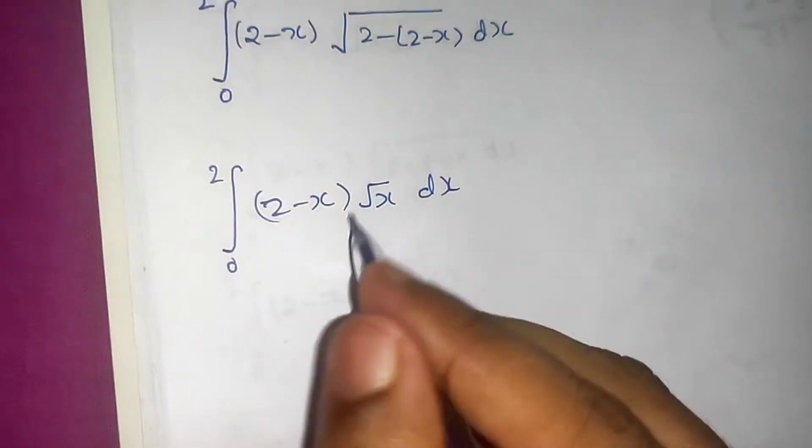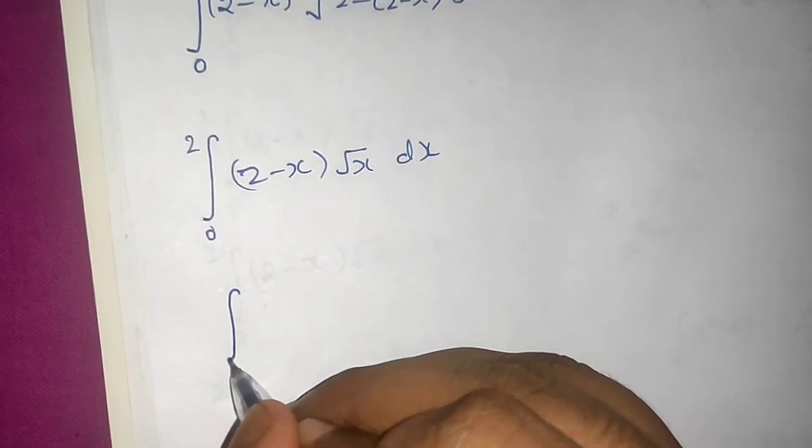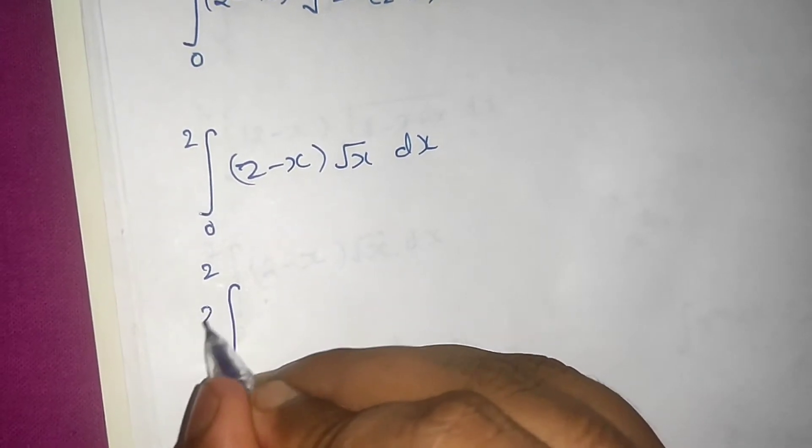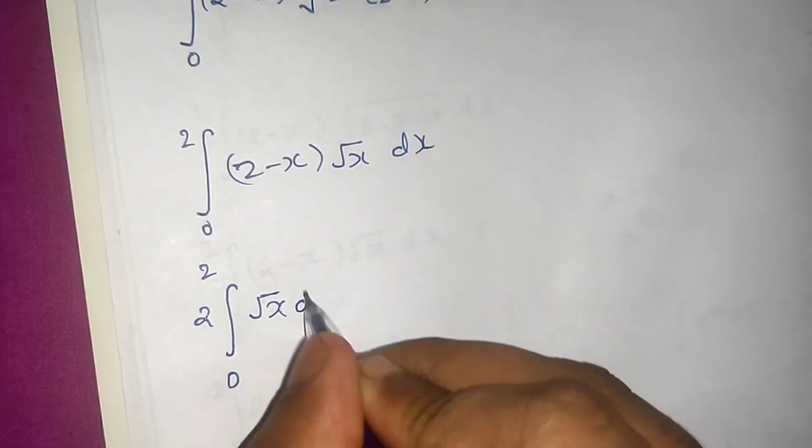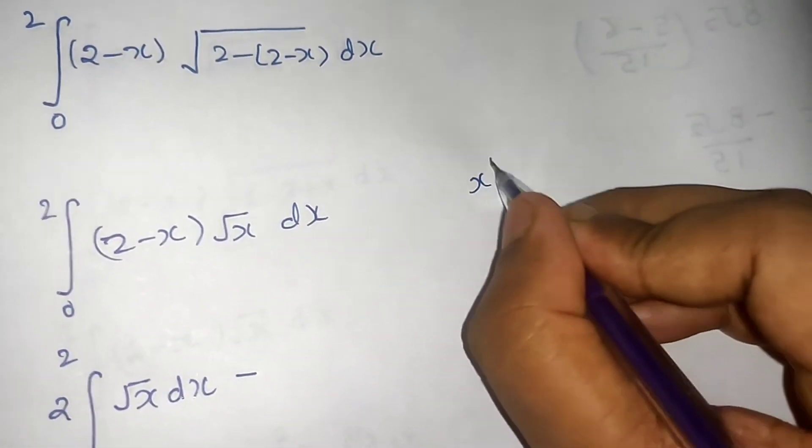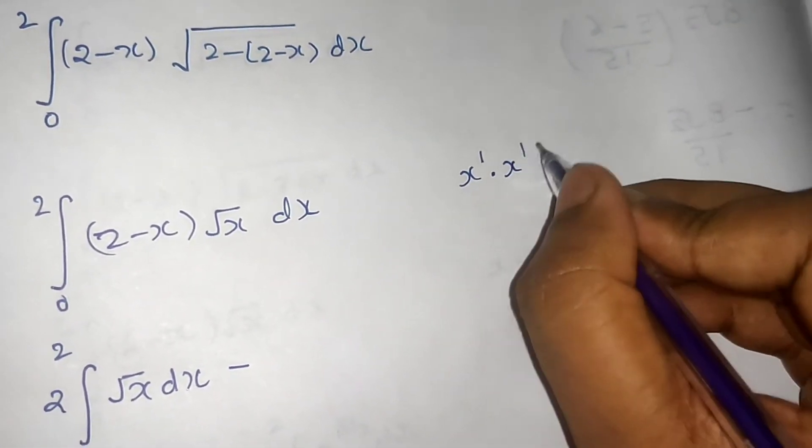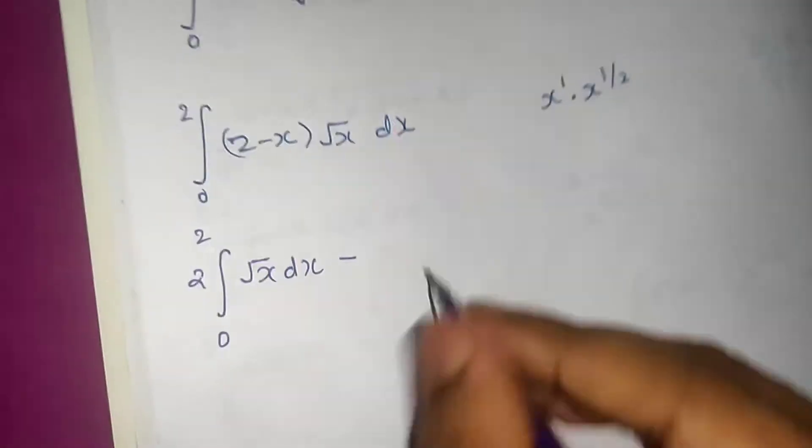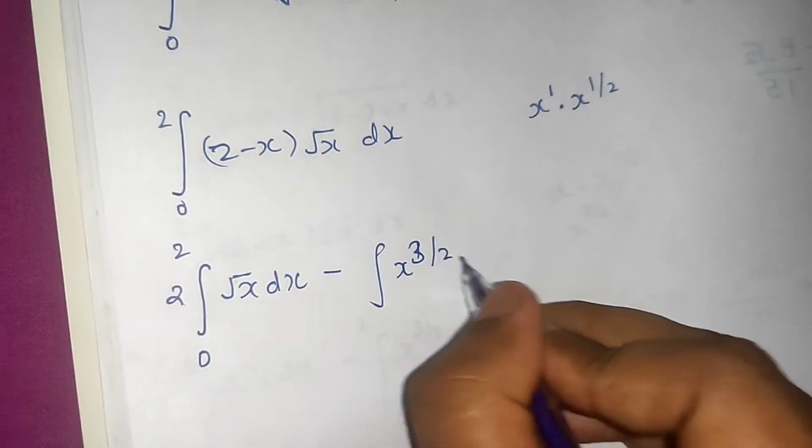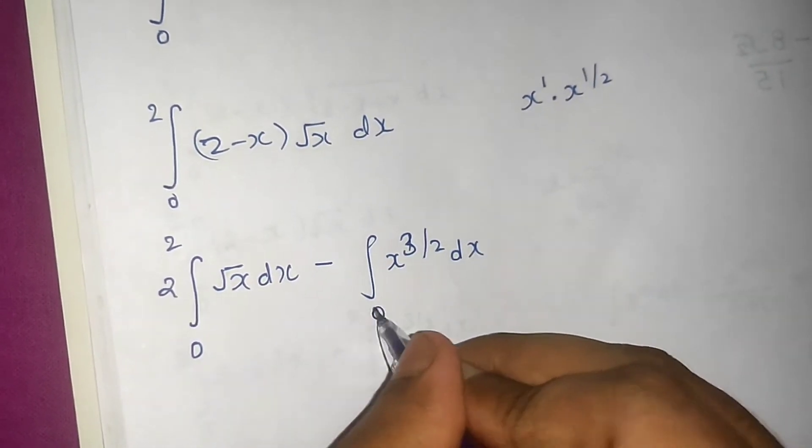So if I want to write this into 2 integrals, it will be 0 to 2, 2 root x. So 2 I can take outside root x dx minus x into root x. So x means x power 1, root x means x power half. So x power 1 plus half, that means x power 3 by 2 dx from 0 to 2.